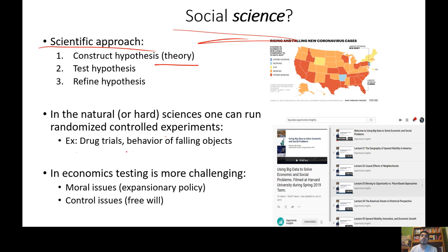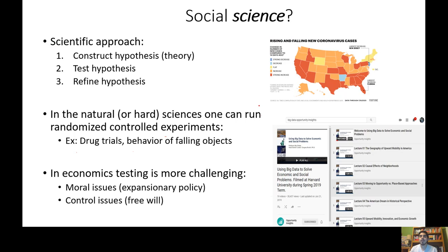Economists are therefore stuck trying to look for natural experiments. They're looking for variations in governmental policy and use all sorts of statistical tools you're learning in AP Statistics — regression analysis and so on. They're looking for natural experiments: observing phenomena in society to draw conclusions.